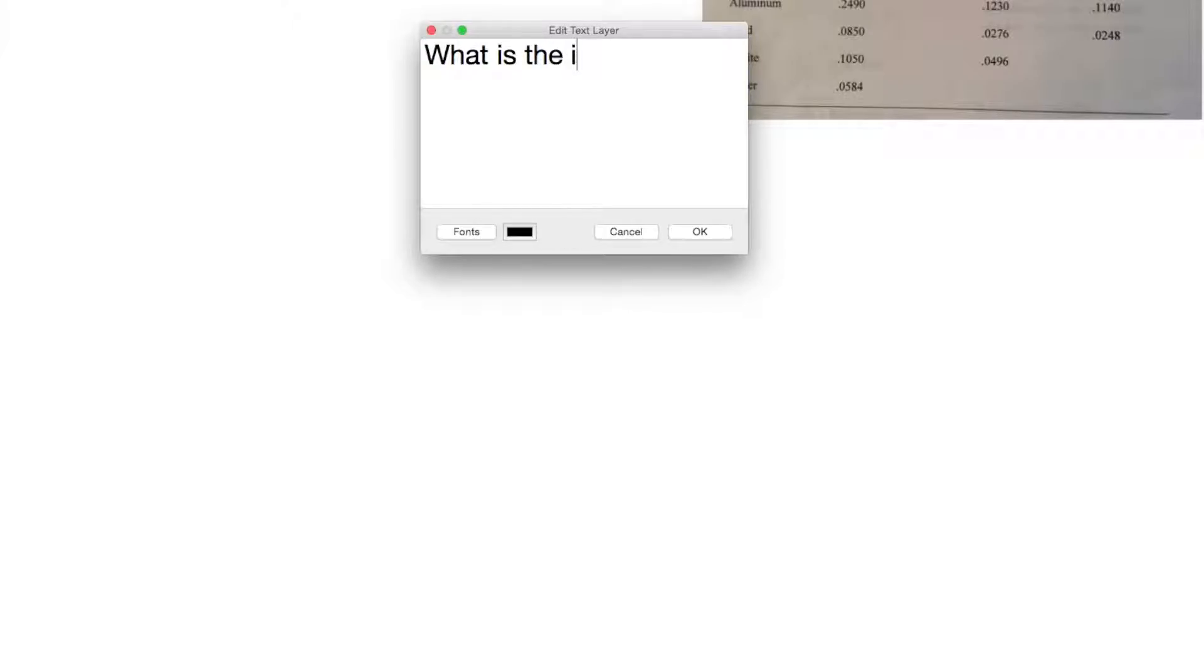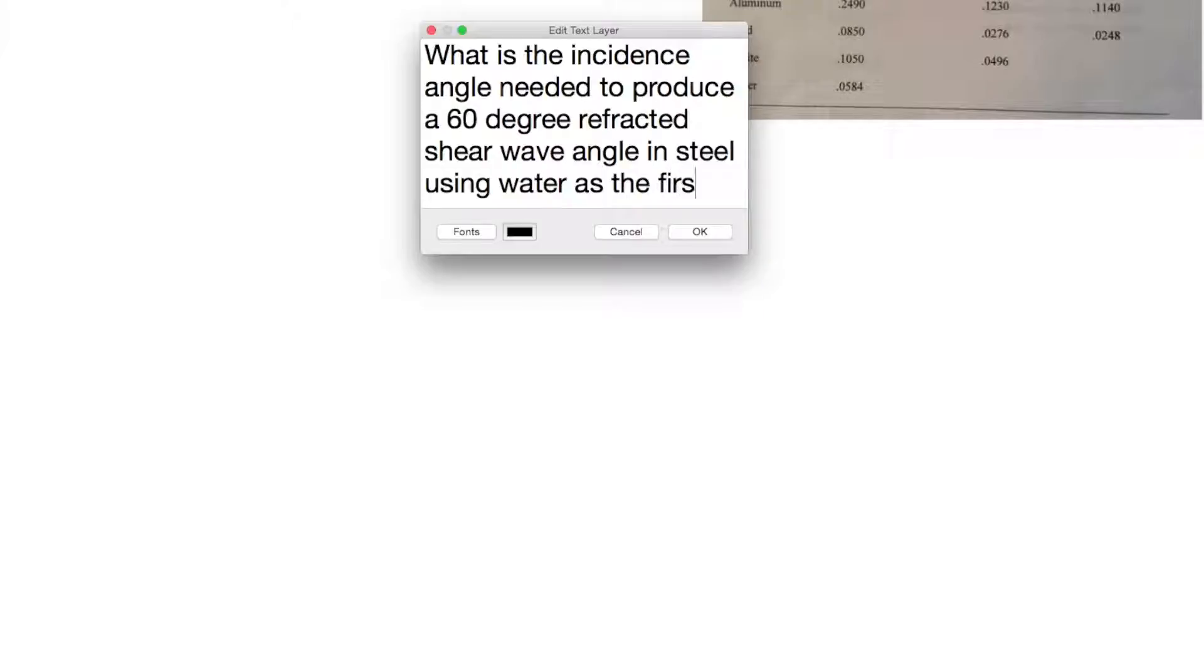What is the incident angle needed to produce a 60 degree refracted angle? So what is the incident angle needed to produce a 60 degree refracted shear wave angle in steel using water as the first medium?